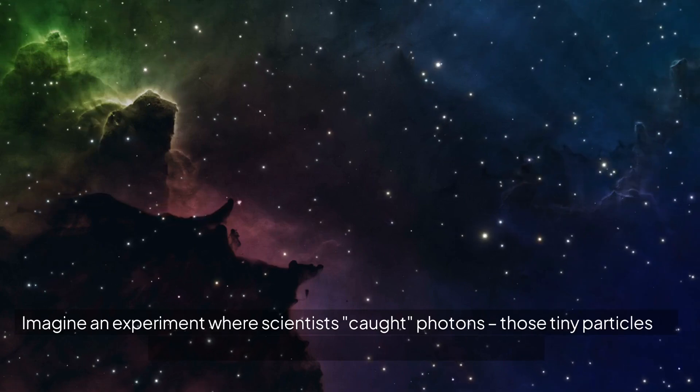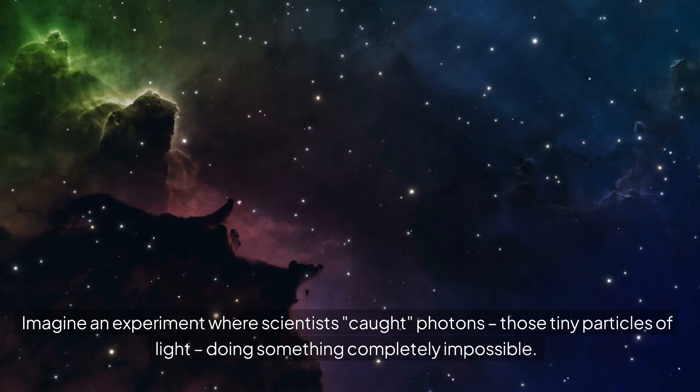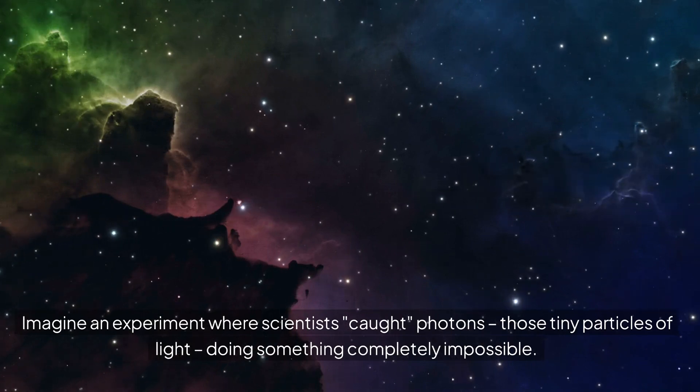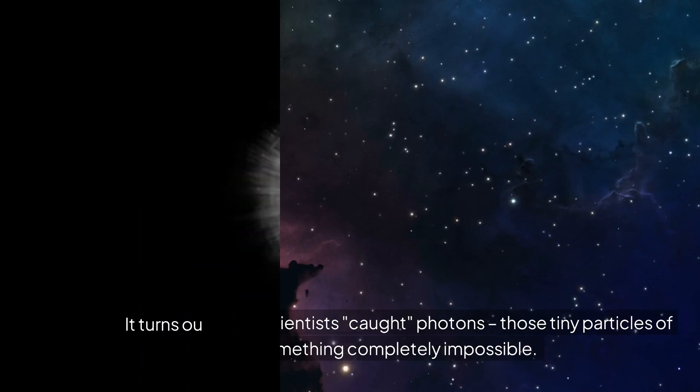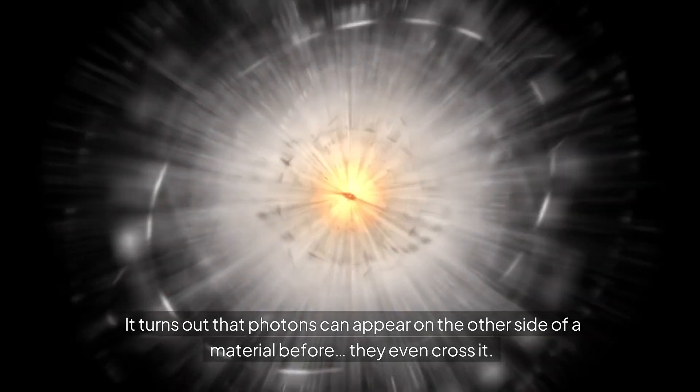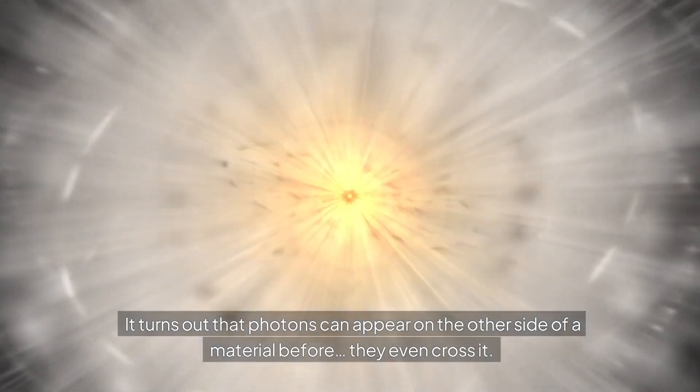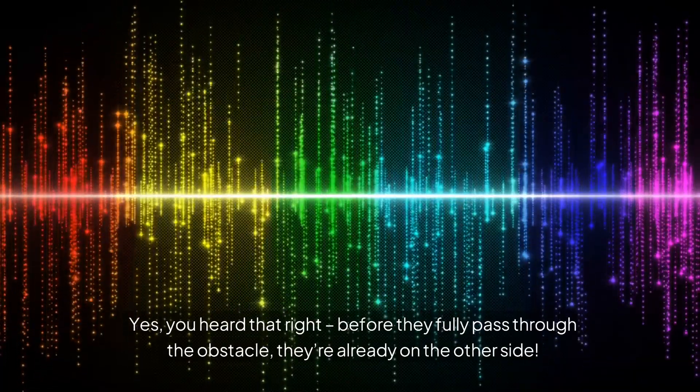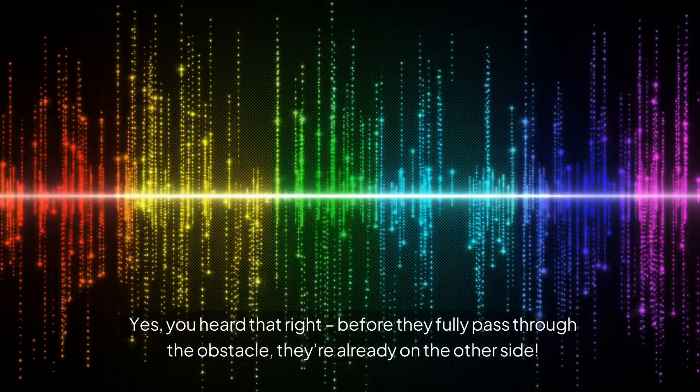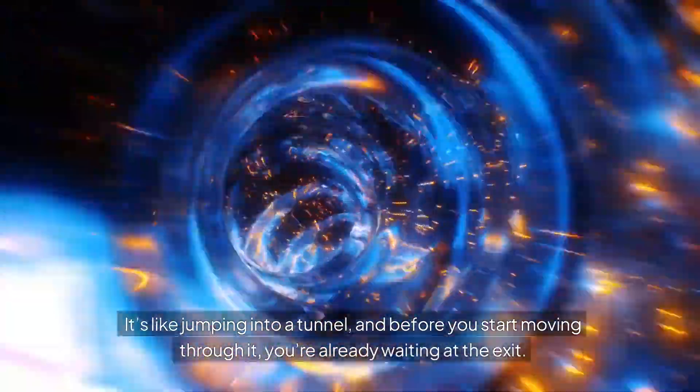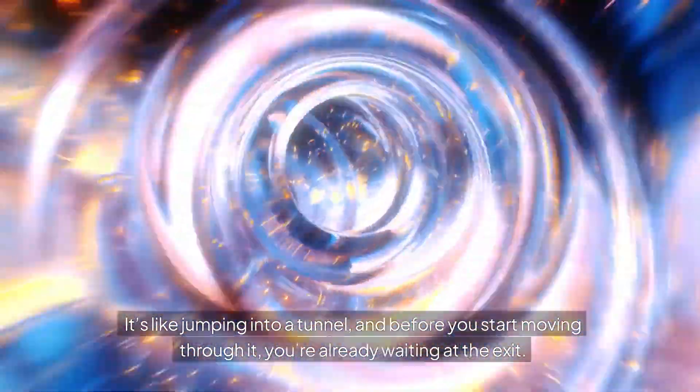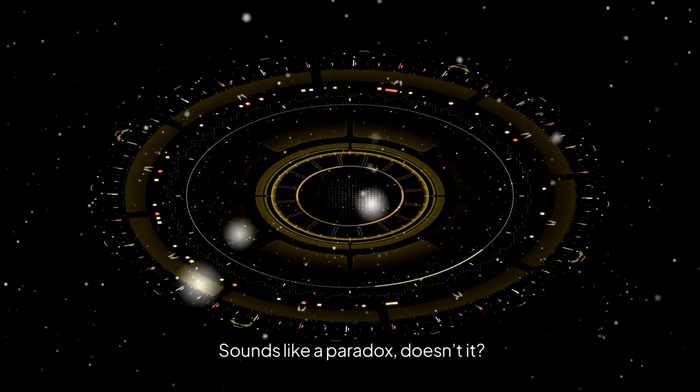Imagine an experiment where scientists caught photons, those tiny particles of light, doing something completely impossible. It turns out that photons can appear on the other side of a material before they even cross it. Yes, you heard that right. Before they fully pass through the obstacle, they're already on the other side. It's like jumping into a tunnel and before you start moving through it, you're already waiting at the exit. Sounds like a paradox, doesn't it?